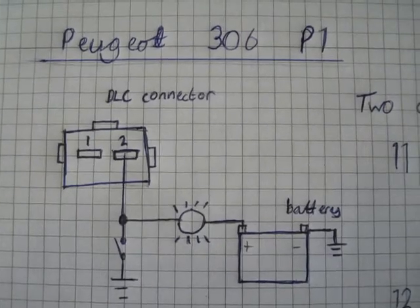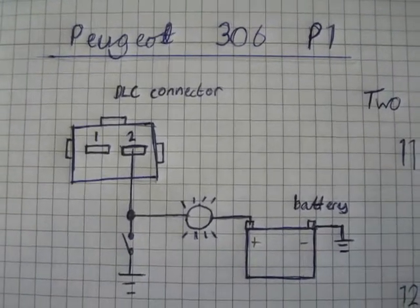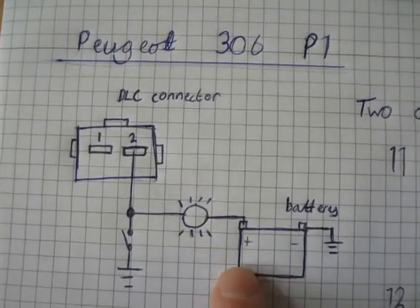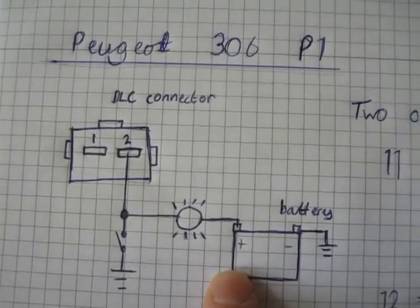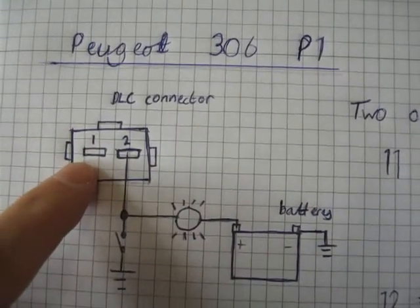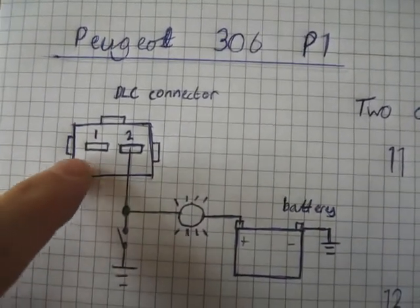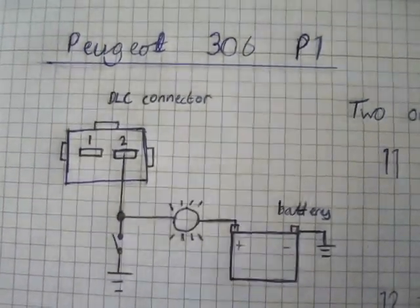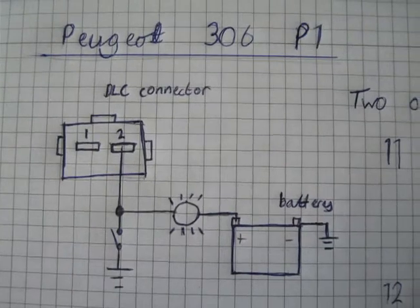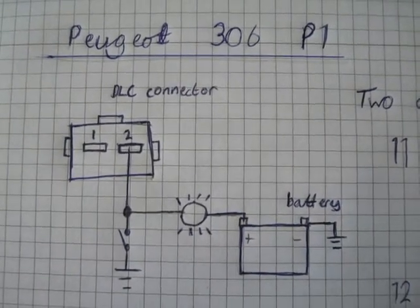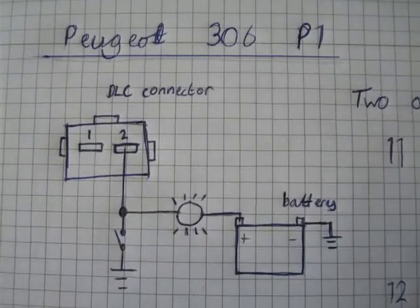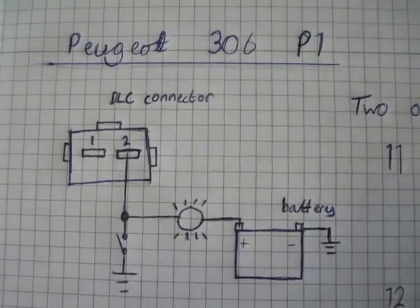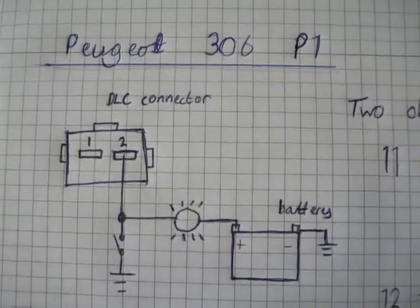The procedure is quite simple. Before connecting anything, make sure the ignition is turned off. Once the ignition is off, connect the positive of the LED test lamp to the battery, the negative to DLC connector pin 2, and also to DLC connector pin 2 connect a loose cable which will be used to ground later. Once everything is connected, turn the ignition on but engine off. Turn off the immobilizer if it is not part of the key itself, and then you can begin the process.